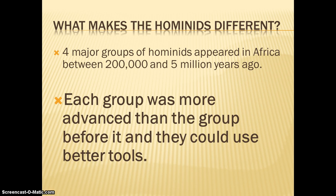The question that you want to ask yourself: what makes the hominids different? Well, there were four major groups of hominids that appeared in Africa between 200,000 and 5 million years ago — so that's a really long time. Each group was more advanced than the last group that appeared. It's just like evolution. Every time a new group appears, they're able to do more things; they're capable of more. So we're going to take a look at these four groups.